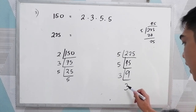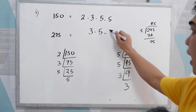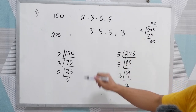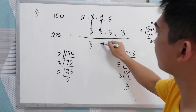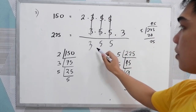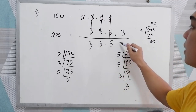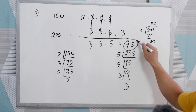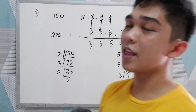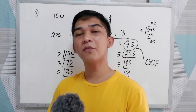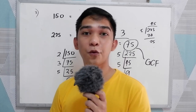Now we have the common factors. Align them: we have 3, 5, and 5 as common factors. Multiply: 3 times 5 is 15, times 5 is 75. This is our greatest common factor. So that is finding the greatest common factor using prime factorization. Thank you for watching.